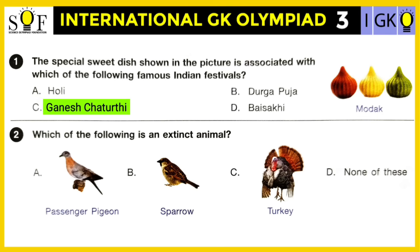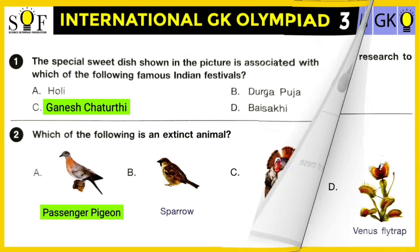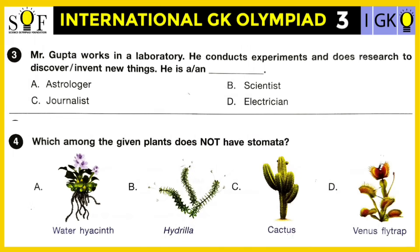Question number two: Which of the following is an extinct animal — passenger pigeon, sparrow, turkey, or none of these? The correct answer is passenger pigeon. The passenger pigeon is an extinct bird species that once lived in North America.